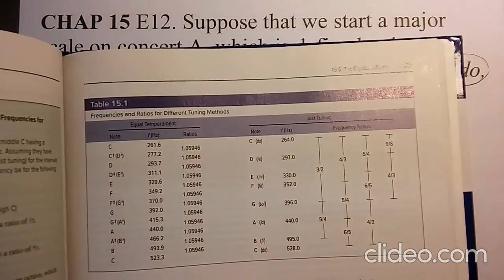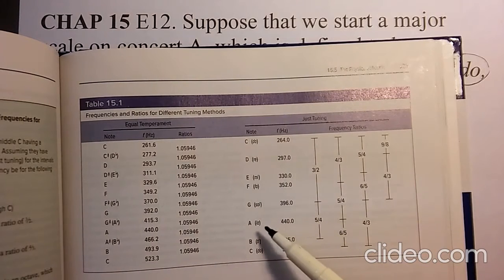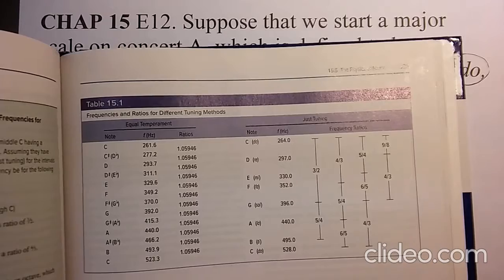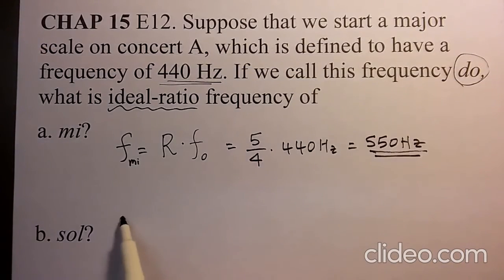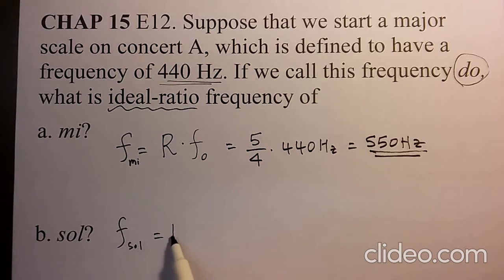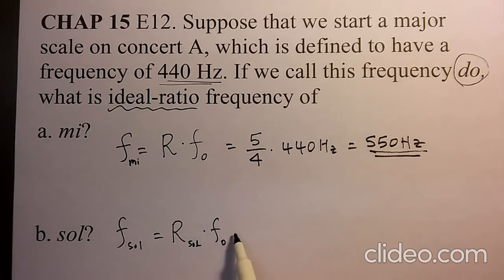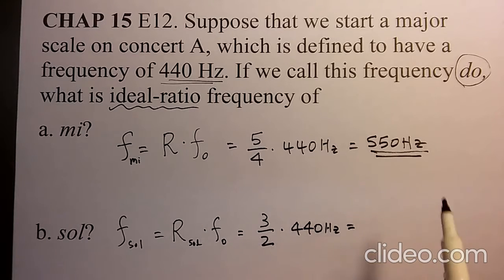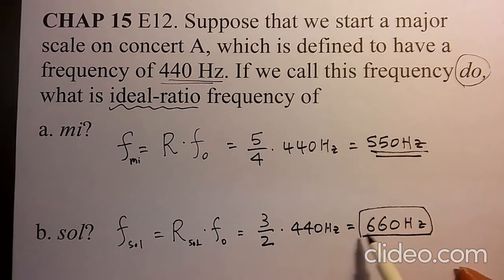From table 15.1, the dho-to-sol ideal ratio is 3 over 2. So the sol frequency equals 3/2 times F0, which is 3/2 times 440 hertz, giving 660 hertz as the sol frequency.